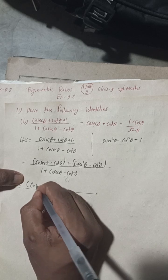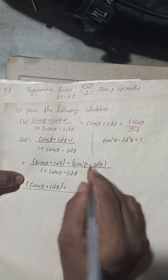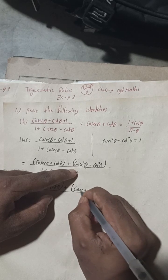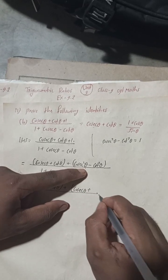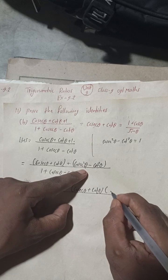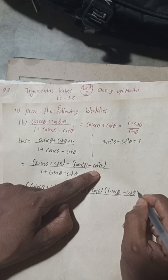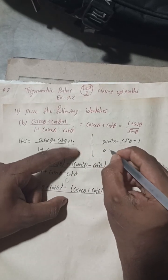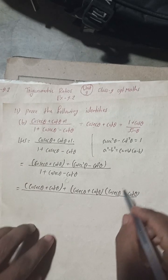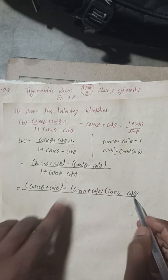In the bracket we have cosec θ + cot θ, plus (cosec²θ − cot²θ). This is in the a² − b² form, so we can write it as (cosec θ + cot θ)(cosec θ − cot θ), using the formula a² − b² = (a + b)(a − b). This formula has been applied here.